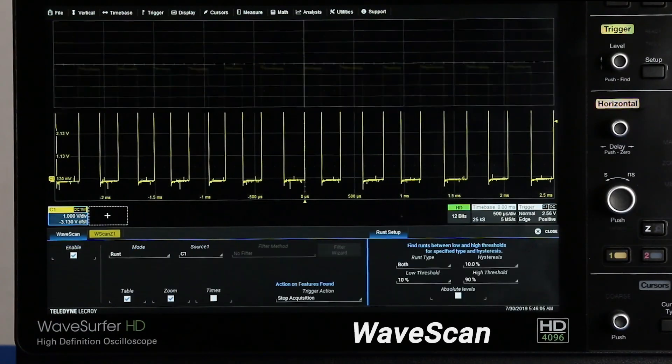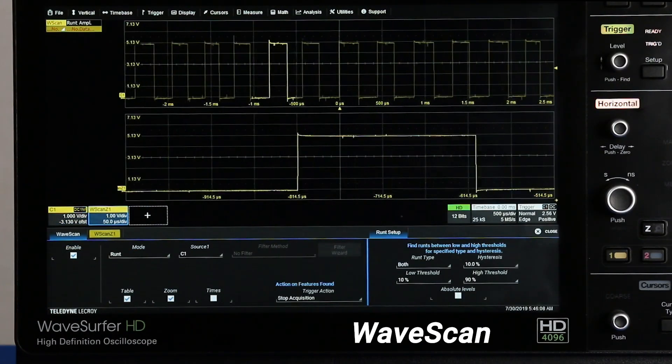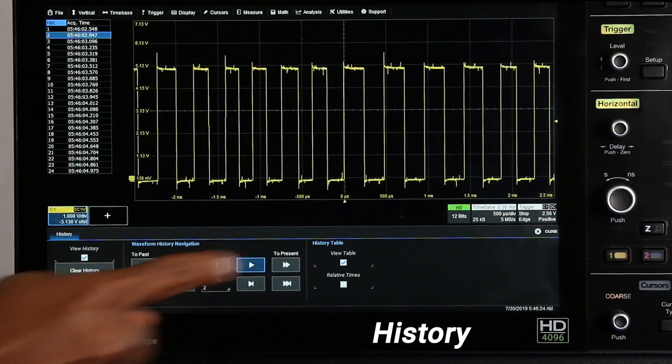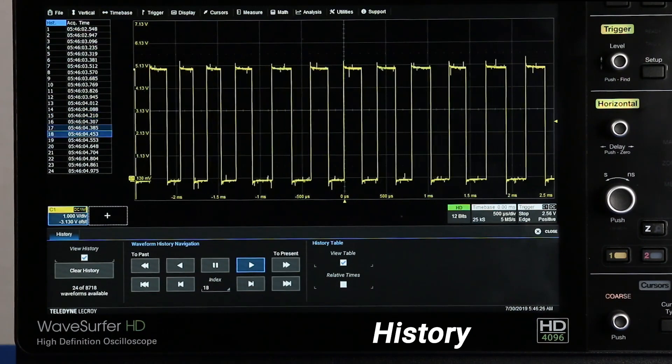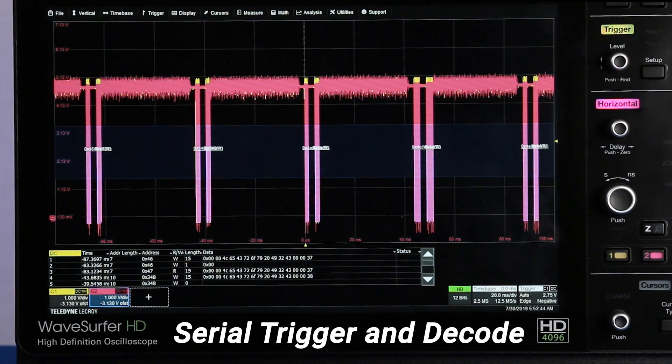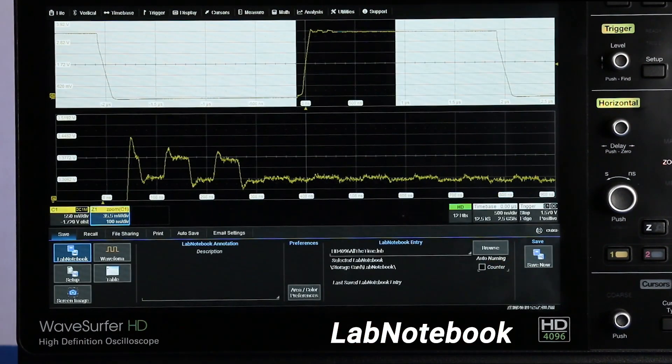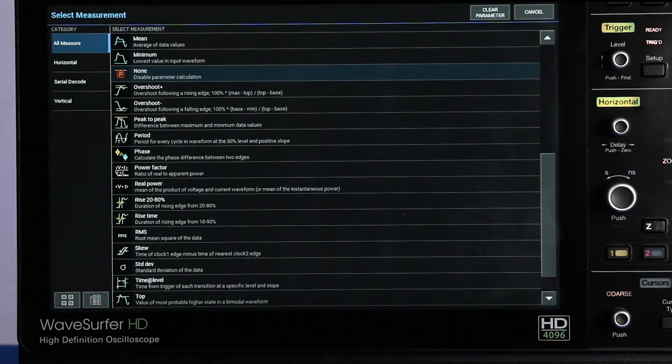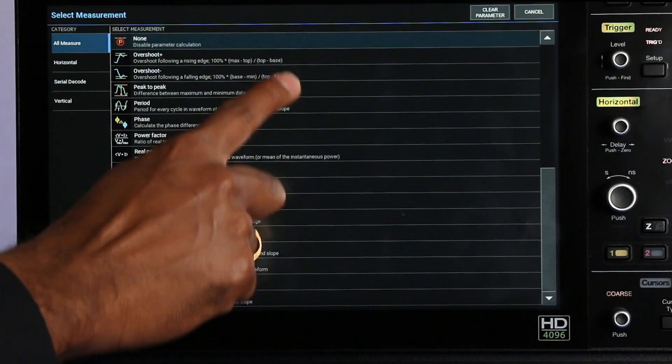To leverage all that performance, WaveSurfer 4000HD comes with a powered suite of measurement and analysis tools including wave scan, history mode, pass-fail mass testing, extensive serial trigger and decode support, sequence mode, lab notebook and loads of advanced math and measurement tools.